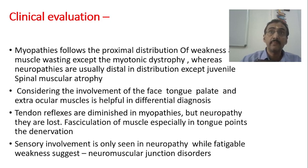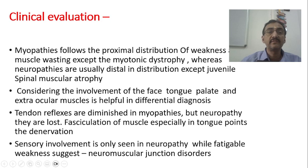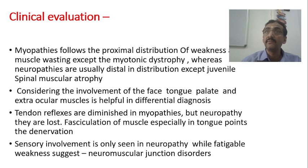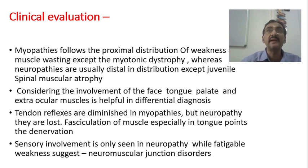Considering the involvement of the face, tongue, palate, and extraocular muscles is helpful in differential diagnosis. Don't limit yourself to the bigger muscles or muscles of the limbs and trunk. Even look at the muscles of the bulbar cavity — pharynx, larynx, etc. — because facioscapulohumeral type of muscular dystrophies majorly involve the face and bulbar areas. We have already seen the patterns of muscle weakness.